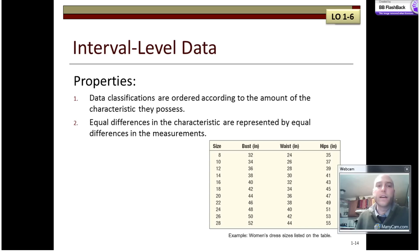Interval level data is a lot like ordinal level data because there is a rank order. But we also know that the gaps between the discrete points, for example 32, 34, 36 inches for bust or 24, 26, 28 inches for waist, those particular gaps are all two inches. Those intervals are all the same. As soon as those interval levels are the same, then we can call it interval level data.